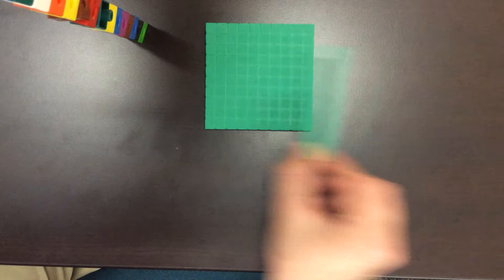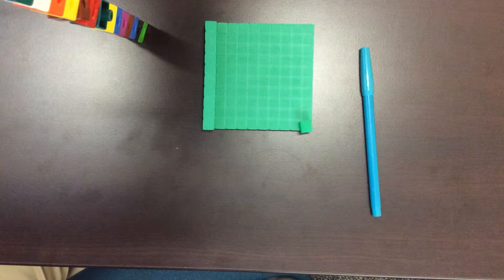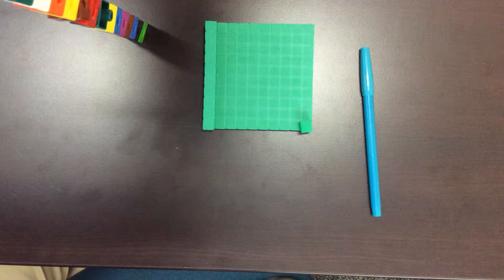So within that one whole we have individual units. We have tenths, which is one tenth of the whole, and we also have hundredths, and that's one hundredth of the entire whole. And we're going to create an array that uses these blocks to be able to help us solve the problem of 2.2 times 1.3.